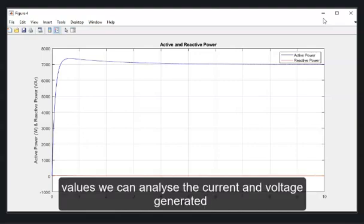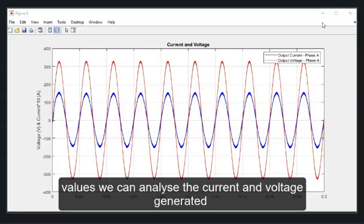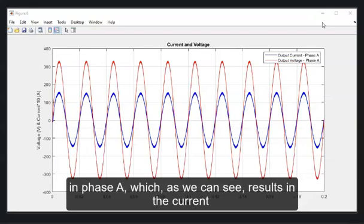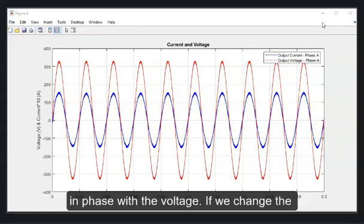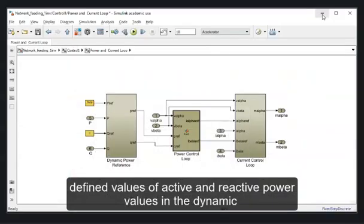This plot is result of specified values of 7 kW and 0 kVA reactive. For these power values, we can analyze the current and voltage generated in phase A, which, as we can see, results in the current in phase with the voltage.